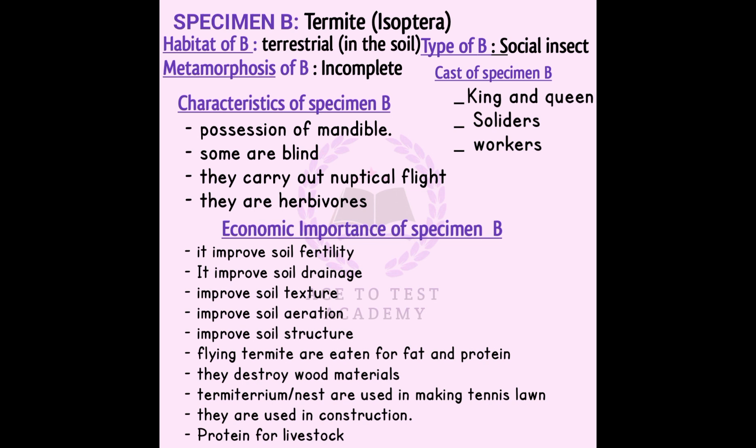Termites carry nuptial flies — that is, wedding flights. They fly out, shed their wings, and walk back to the hive. They are herbivores; they feed on plants, mostly wood and the roots of plants. Their economic importance includes soil fertility, soil drainage, soil texture, soil aeration, and soil structure.